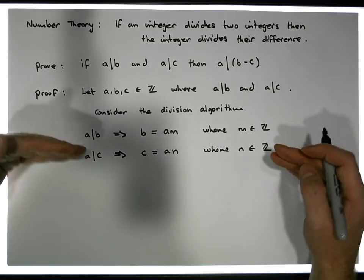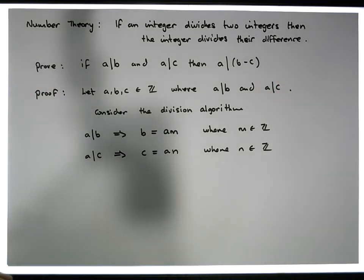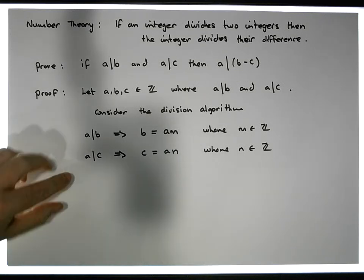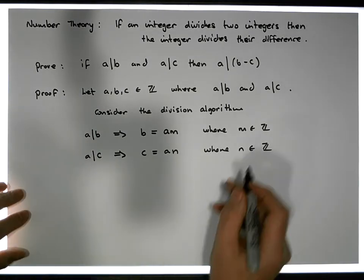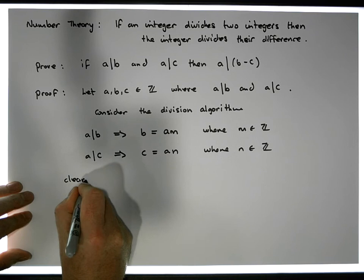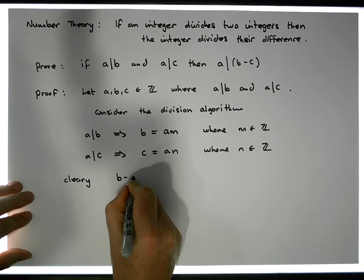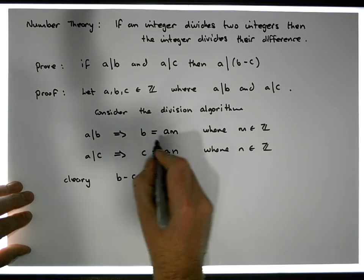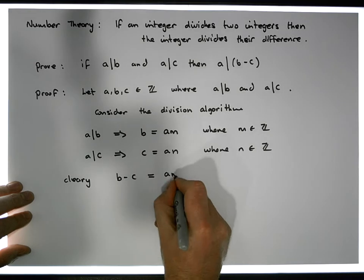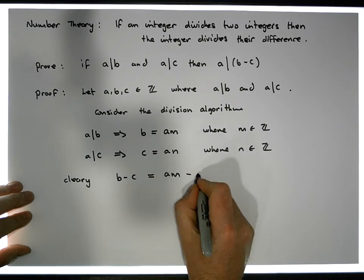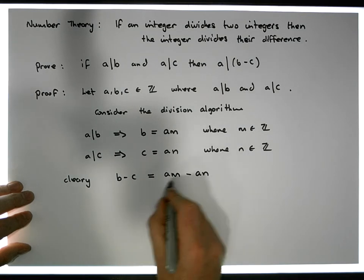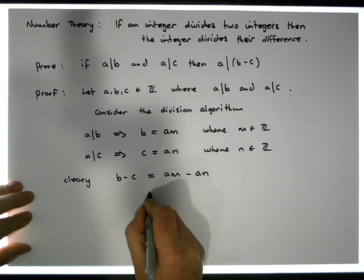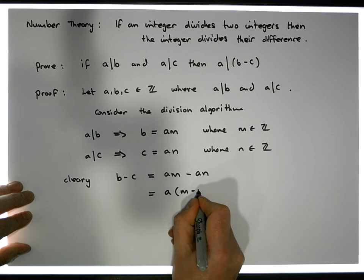So we now have an integer that divides two other integers. And what we'd like to show is that this integer A divides our difference. Well let's have a look at what the difference looks like. Clearly, B minus C looks like it's equal to B, which is A times M, minus A times N. Now what does this look like? Well, there's a common factor across these two terms, which is A. So this is equal to A times (M minus N).